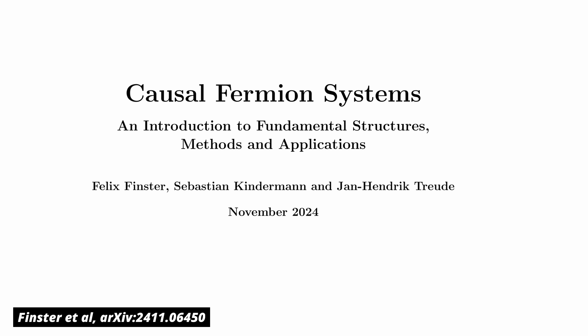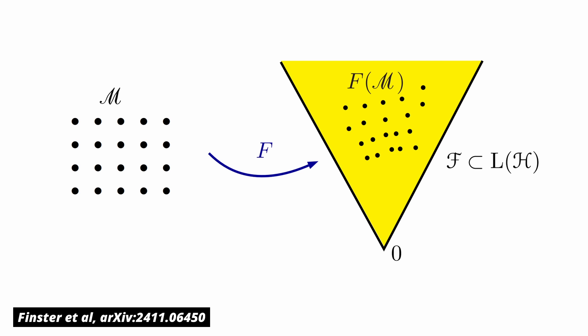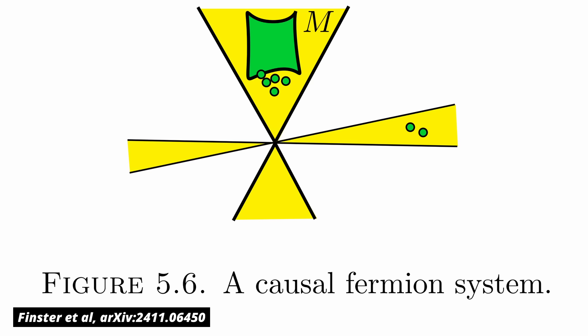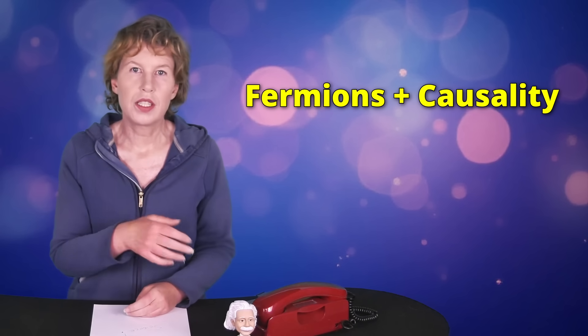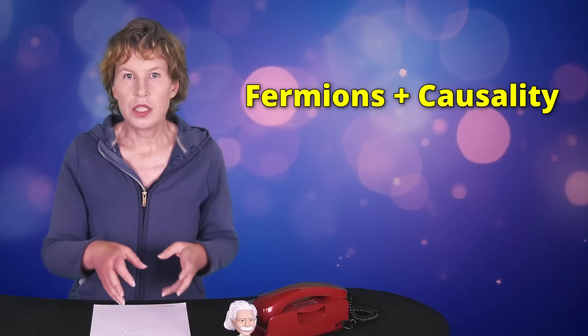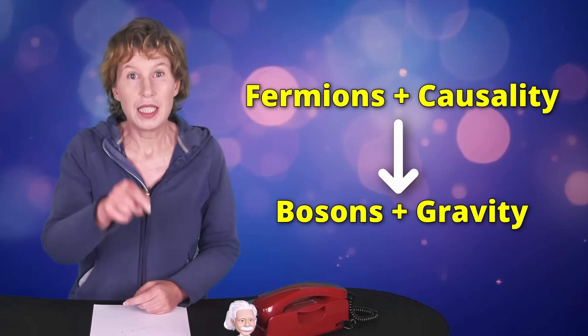Now about those causal fermion systems. Felix Finster, who came up with this idea, doesn't start with space and time and puts particles in it. He just starts with matter in the form of fermions. The fermions form a sort of network in which the nodes are either occupied by a fermion or not, and the links are causal relations. What fermions? He starts with the fermions of the standard model. Then he shows he also gets the bosons plus, here is the relevant part, he gets gravity.